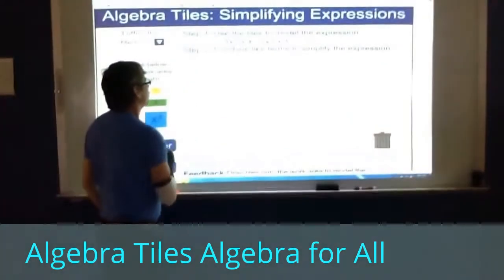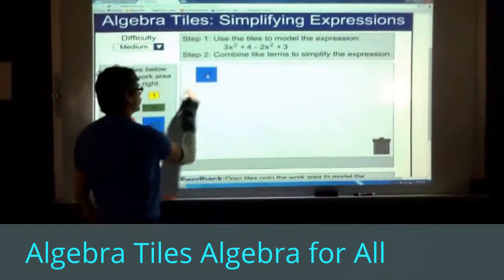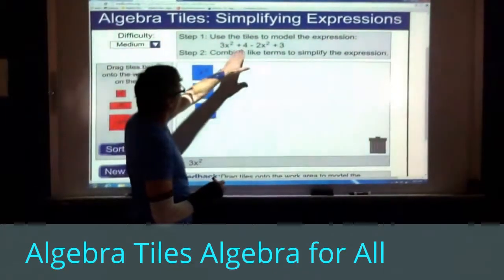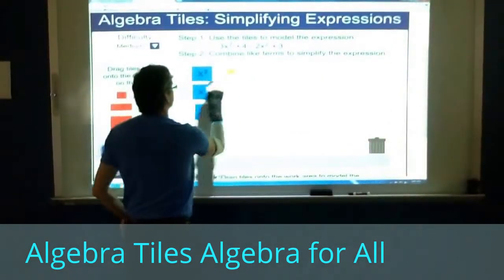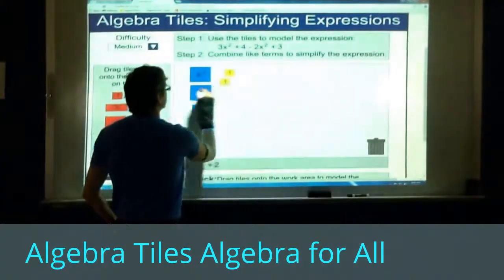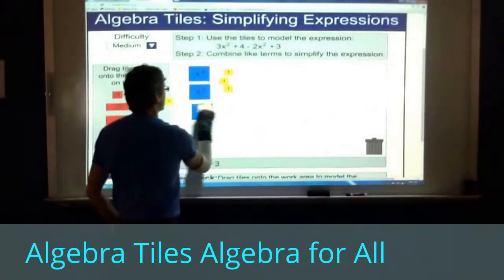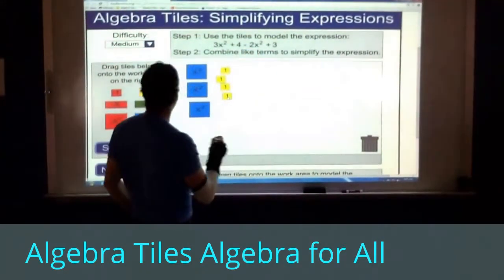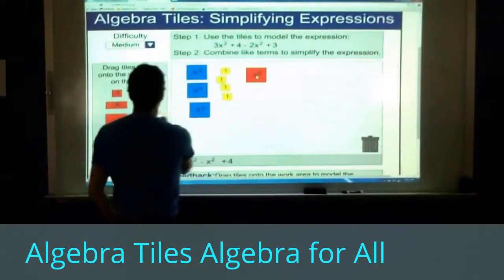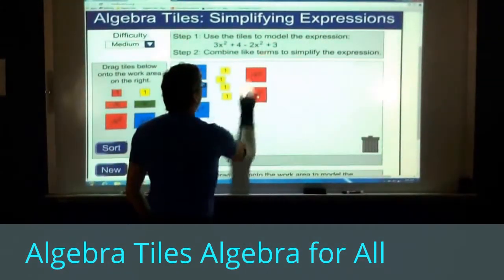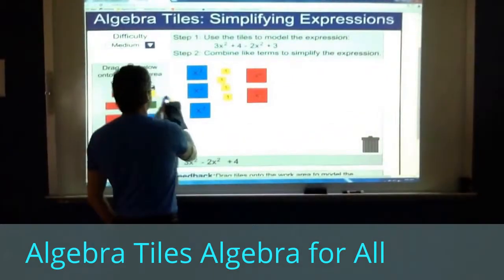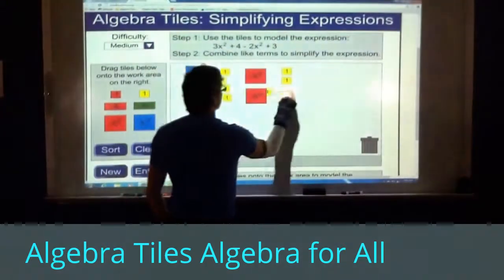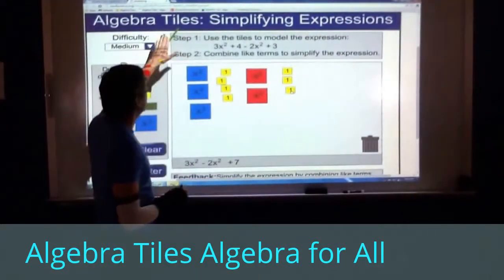To model the first term, we have 3x squared, so I'm going to slide over 3x squareds. And then I'm going to have a 4, which means 4 ones. And then we have a negative 2x squared, which means 2 negative x squareds. And then I have a 3, which means 3 ones.